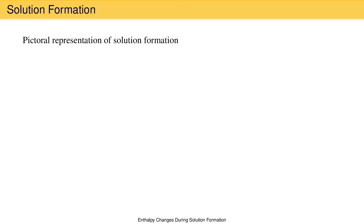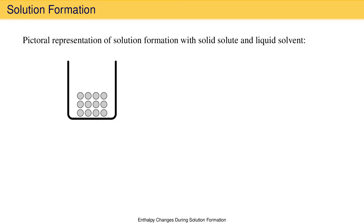Let's draw some pictures representing the formation of a solution from a solid solute and a liquid solvent. The solute can be represented as a series of particles, the gray circles, neatly aligned left to right and top to bottom. An ordered arrangement like this is indicative of a crystalline solid such as an ionic solid. Note that the circles do not take the shape of the container and do not fill it, just like we expect for a solid. When the particles making up the solid are bonded together in this way, we call them aggregated.